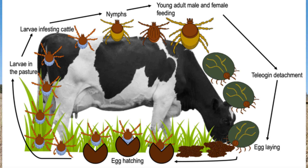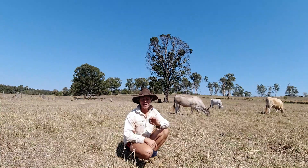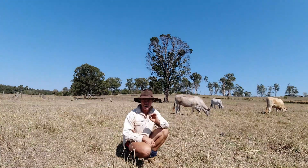Once they're on the cattle, they start to feed and then undergo a molt, shedding the larval skin before entering the nymph stage of their life cycle. When they're in the nymph stage, they start to feed and mate, then undergo another molting before starting their phase as an adult tick.